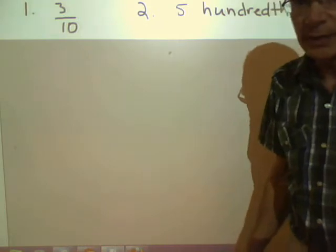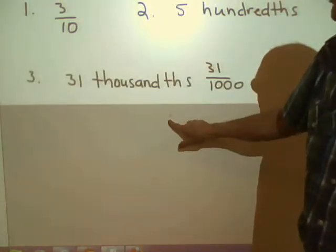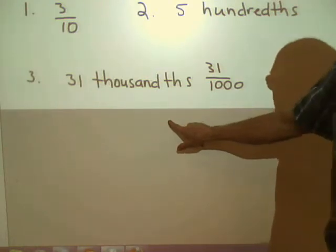Well, as I mentioned in class, these numbers say themselves. Here's a third one we're going to do. Write thirty-one-thousandths as a decimal.